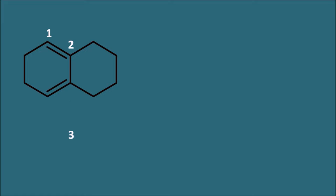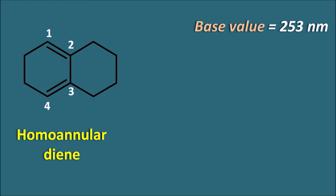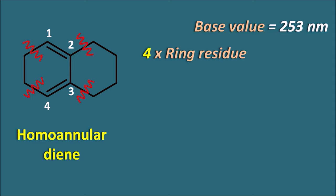Now let us take the second structure. Identifying the chromophore as 1, 2, 3, 4 — both double bonds are within the same ring, so it is again a homoannular diene with a base value of 253 nm. For ring residues: at position 1 there is a ring residue, at position 2 another, at position 3 another, and at position 4 another. We should not break within the chromophore (between 1-2, 2-3, 3-4). So we have four ring residues: 4 × 5 = 20 nm.